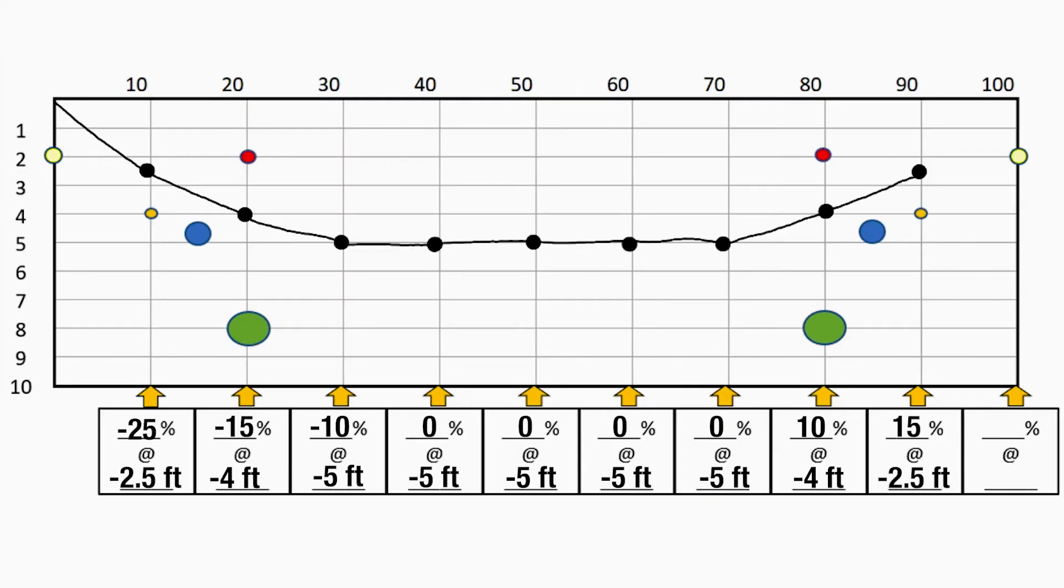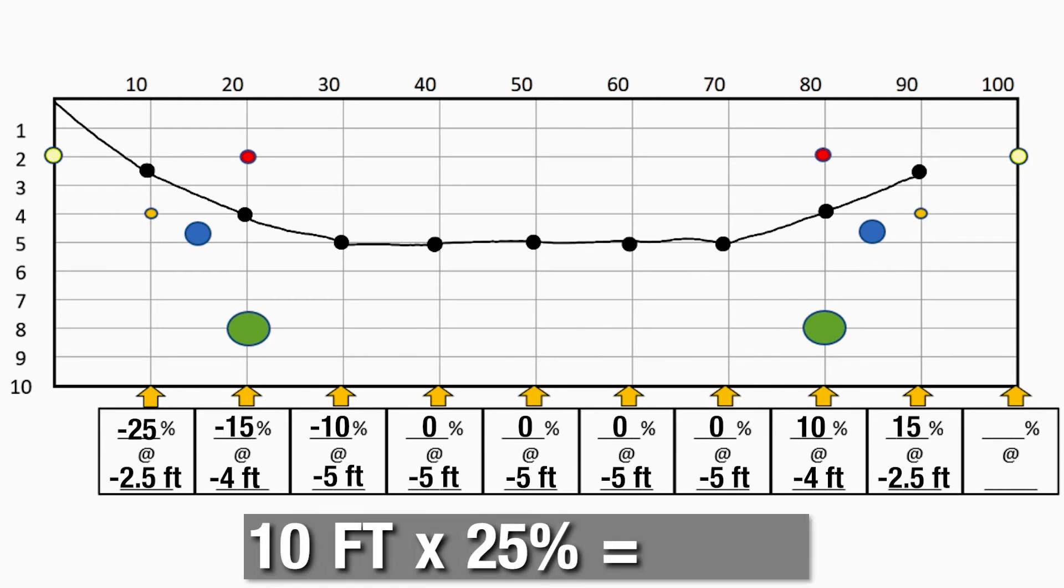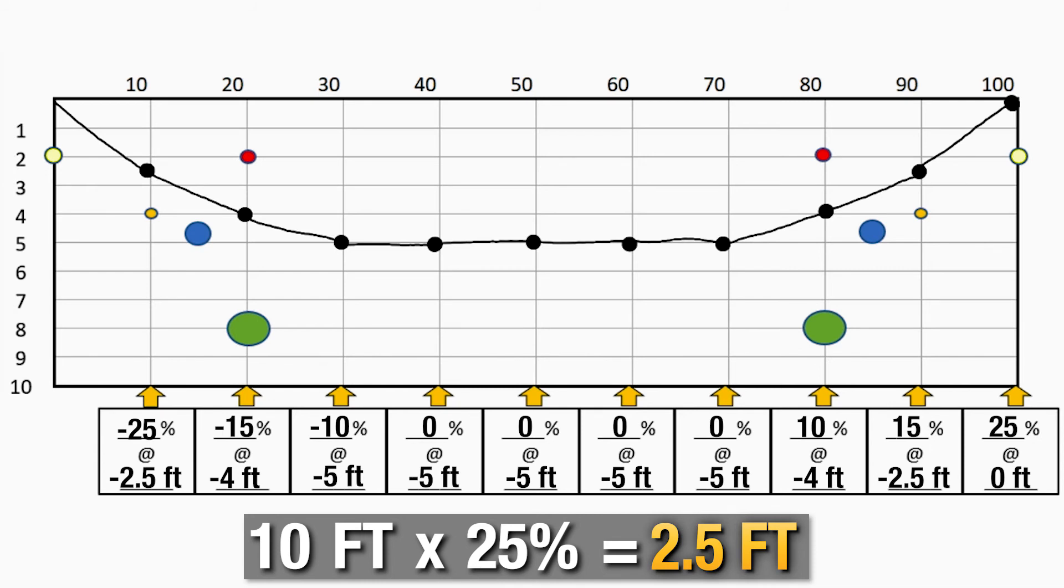My current depth is two and a half feet at a positive 15%. To exit the ground at the end of this rod, a two and a half foot depth change is needed. A positive 25% pitch results in a two and a half foot depth change. Drawing the last rod on my graph shows that at a positive 25% pitch, I exited the ground at the end of the tenth rod.